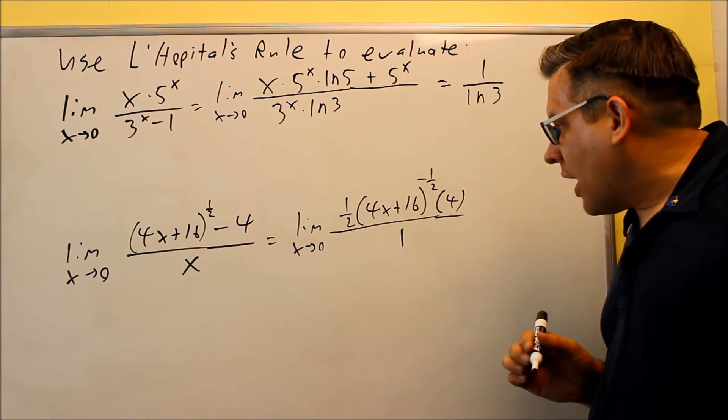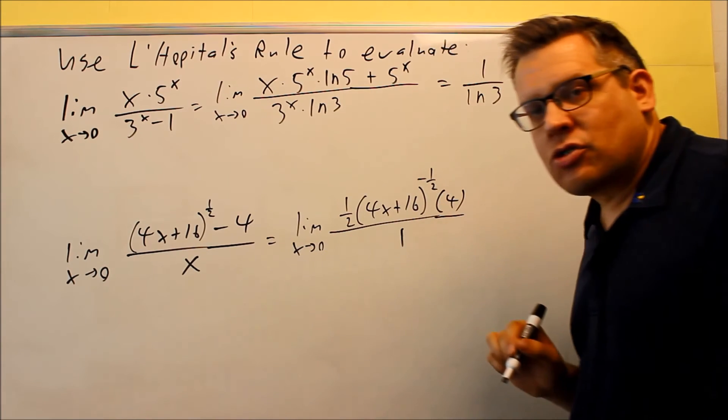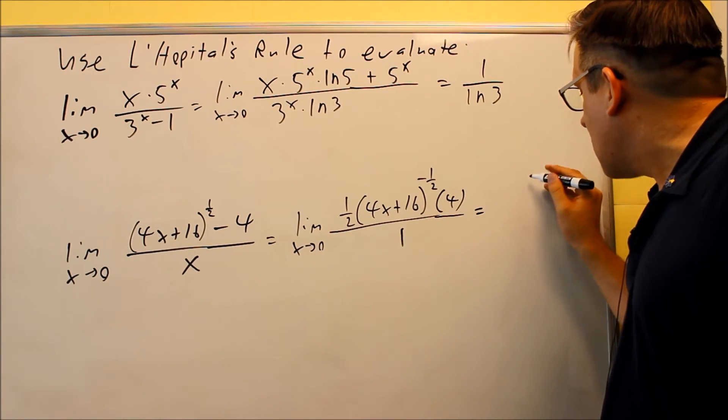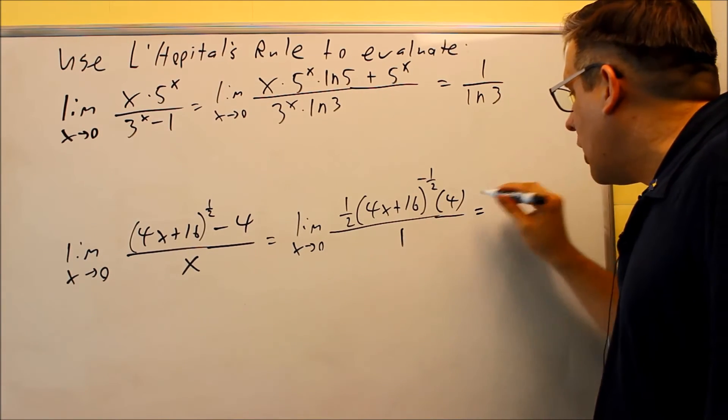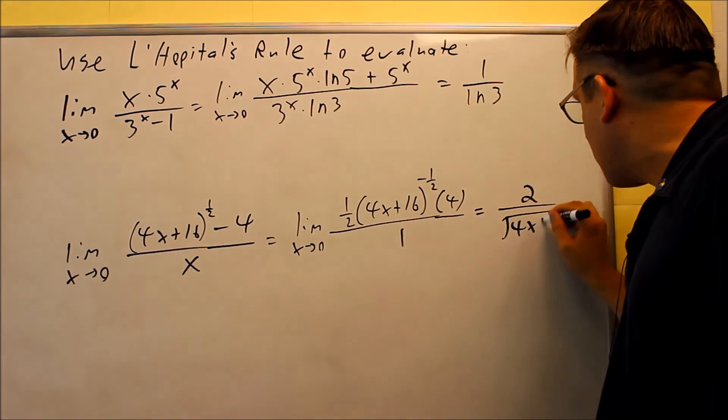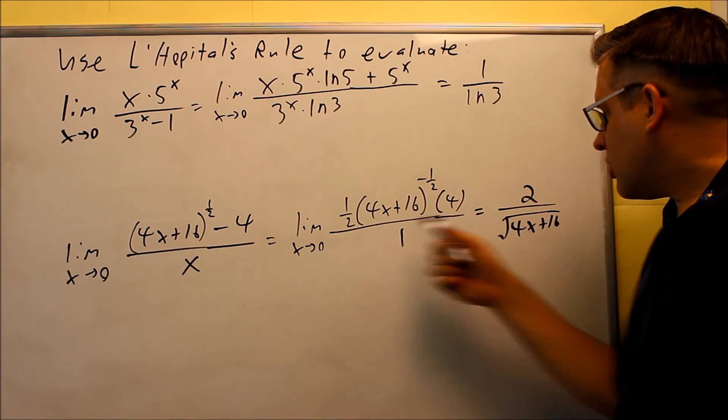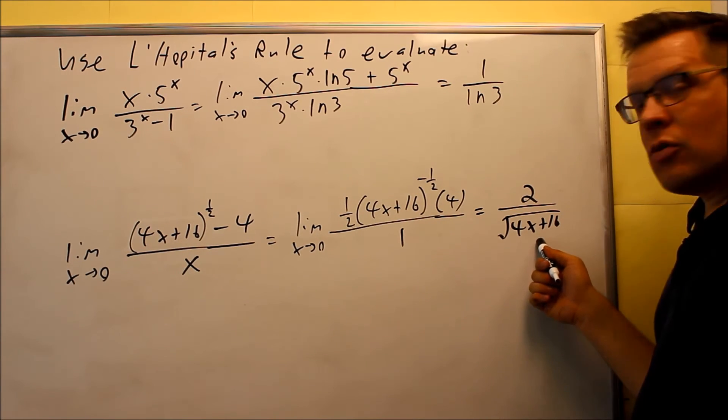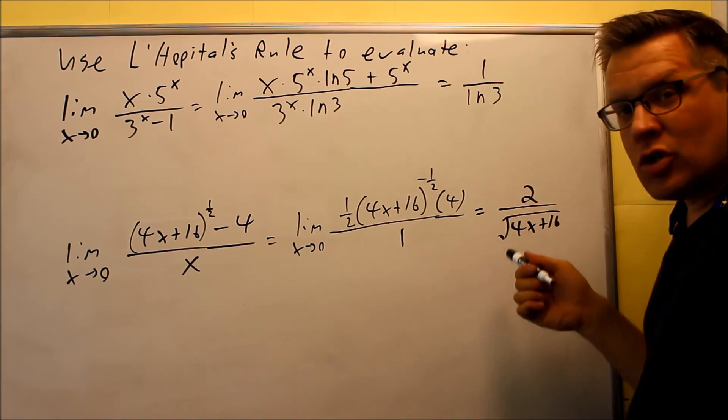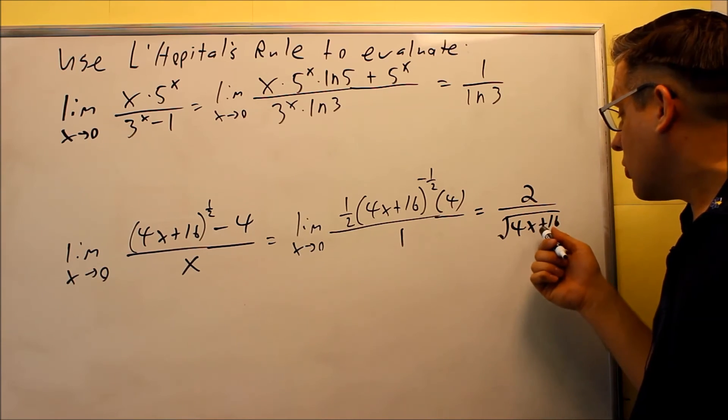Right away, I see I'm no longer going to have a 0/0 situation. Let's rewrite this: I have 2 over √(4x + 16). If I put 0 in here, I'm not getting 0/0, so I don't need to use L'Hôpital's Rule again.